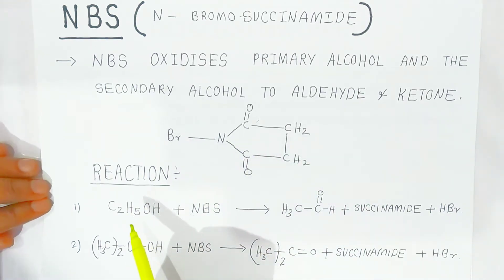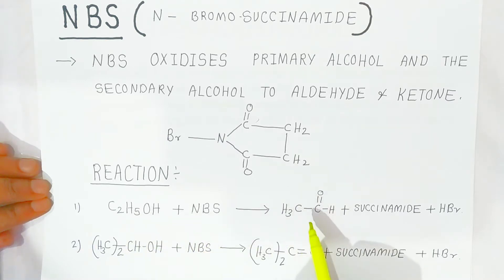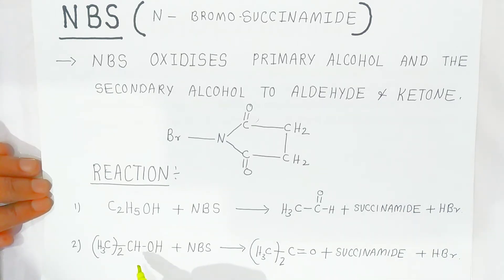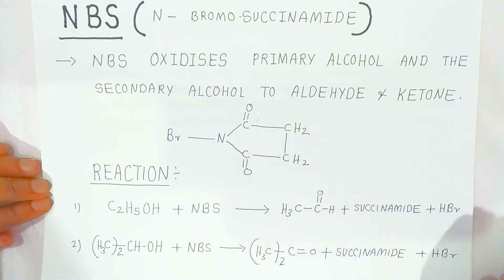When you see the reaction, this is ethanol. When it combines with NBS, it will oxidize this ethyl alcohol — it is converted into acetaldehyde, plus succinimide, and HBr is eliminated. For secondary alcohol, when NBS oxidizes it, it will give you ketone and succinimide and HBr. So this is a very important oxidizing agent for primary and secondary alcohol.